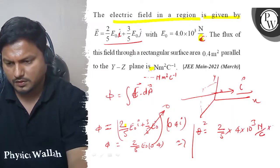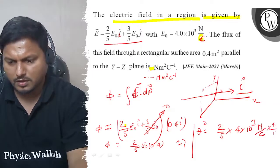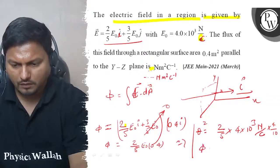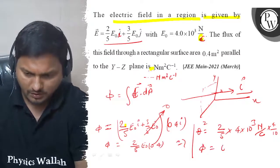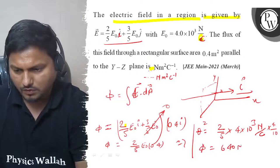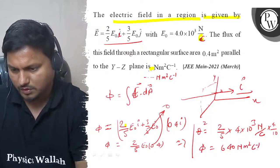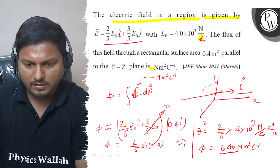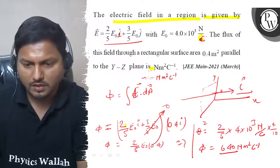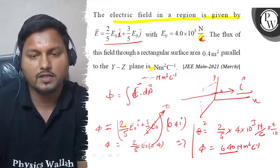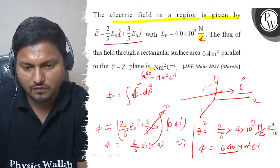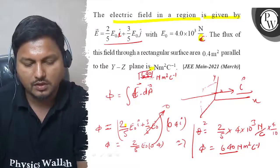We get phi equals to 640 newton meter square per coulomb. So the answer is 640. We will put 640 in this blank - 640 is the answer of this question. Best of luck.